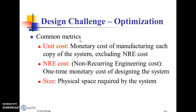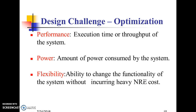Common Design Metrics include: Unit Cost — the monetary cost of manufacturing each copy of the system, excluding NRE cost. NRE Cost (Non-Recurring Engineering Cost) — the one-time monetary cost of designing the system. Size — the physical space occupied by the system. Performance — the execution time or throughput of the system. Power — the amount of power consumed by the system.